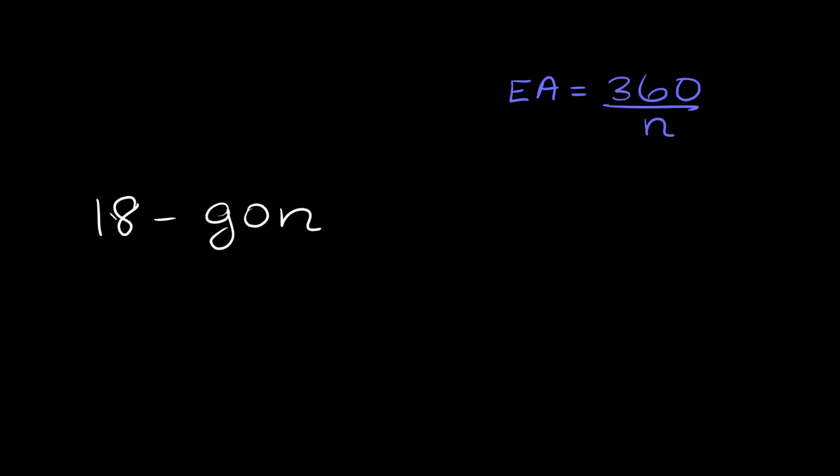So if you want to find the measure of an exterior angle then this would be equal to 360 divided by 18 and that's equal to 20 degrees. So each exterior angle of a polygon that has 18 sides is equal to 20 degrees.